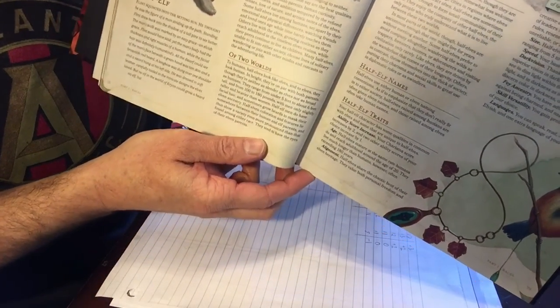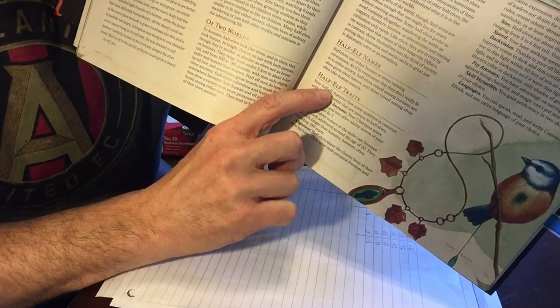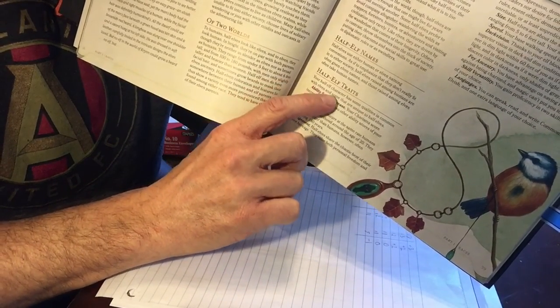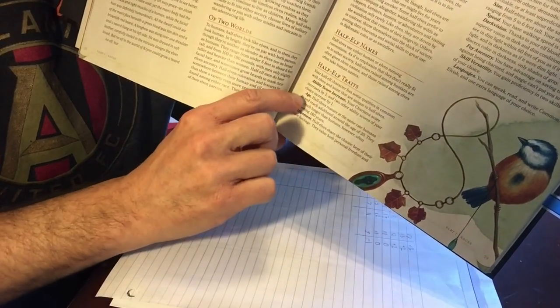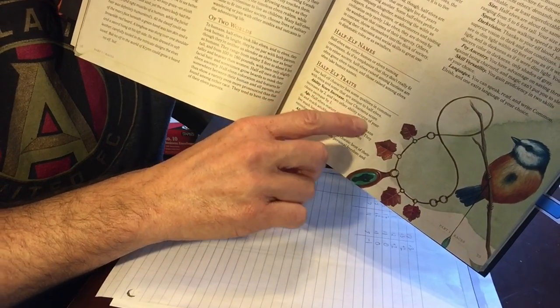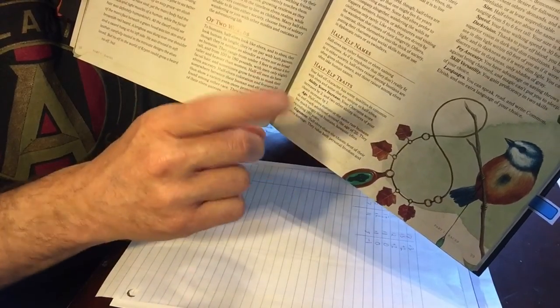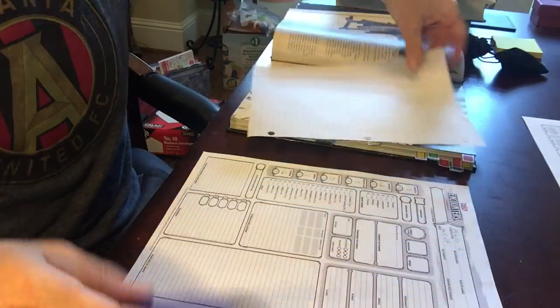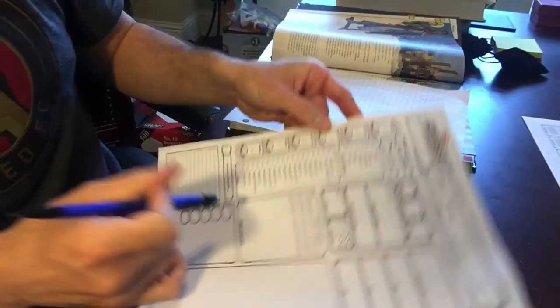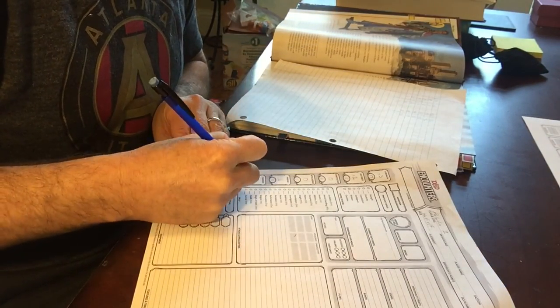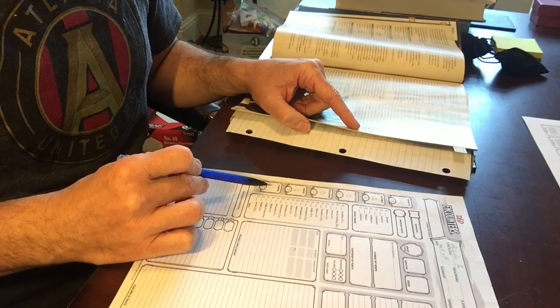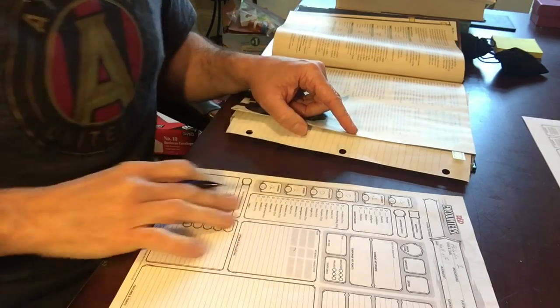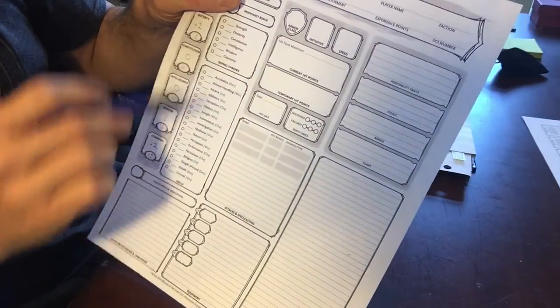Okay. So we're looking at the half-elf now. And it says half-elf traits. Your half-elf character has some qualities in common with elves and some that are unique to half-elfs. Ability score increase. Your charisma score increases by 2. And two other ability scores of my choice increase by 1. So if my charisma increases by 2, that's why I always use an eraser, I look at charisma, which is right now at 13. So it increases by 2, which means it increases to 15, which means my charisma modifier is no longer a plus 1. So at 15, it becomes plus 2.